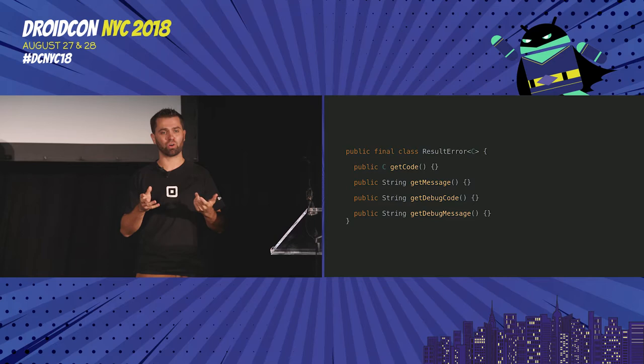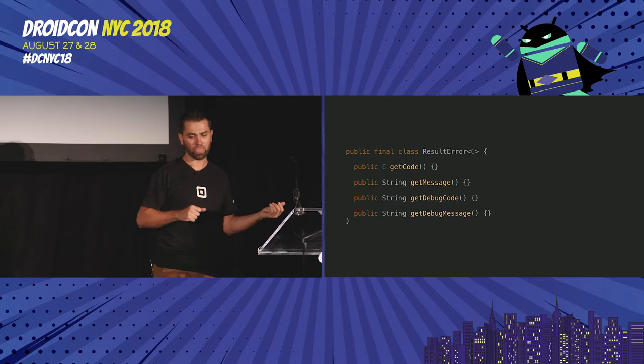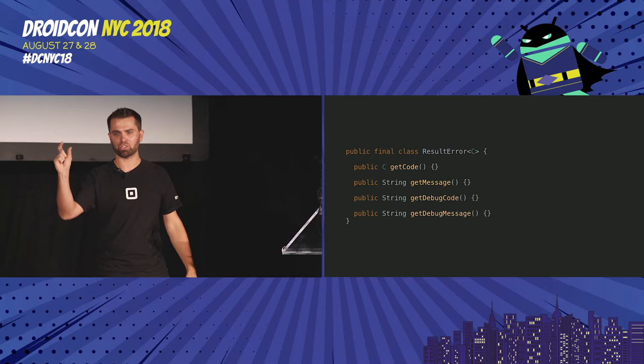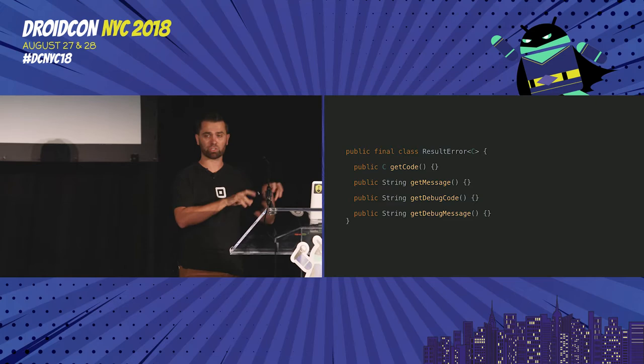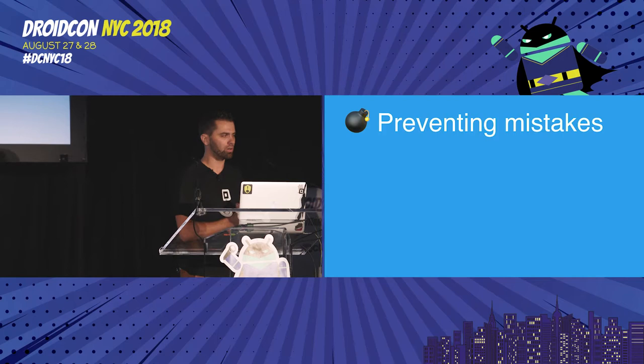The key idea is we never want to show a customer a weird error message. In the case of a usage error, the message would say something like 'an error happened, please contact the developer,' and we'd append a short code at the end so the customer could take a screenshot, contact the developer, and pass that along. The developer could then search for that code on Google and find the explanation.